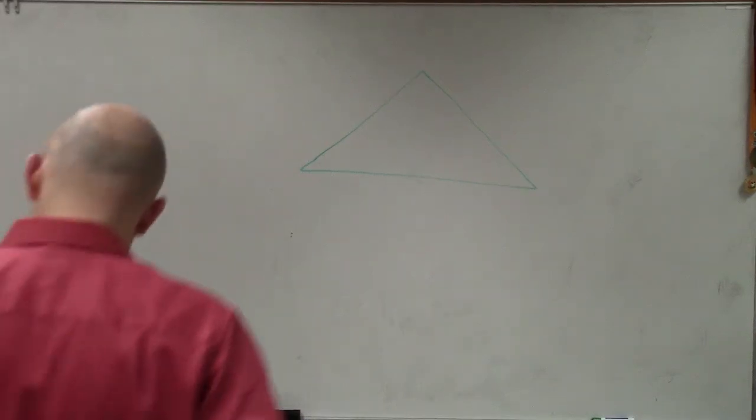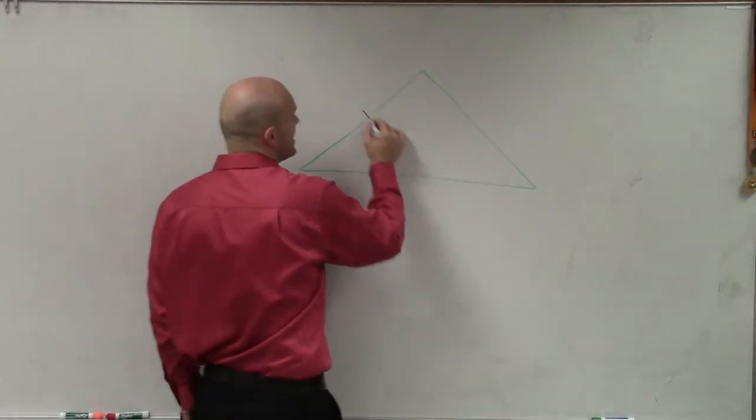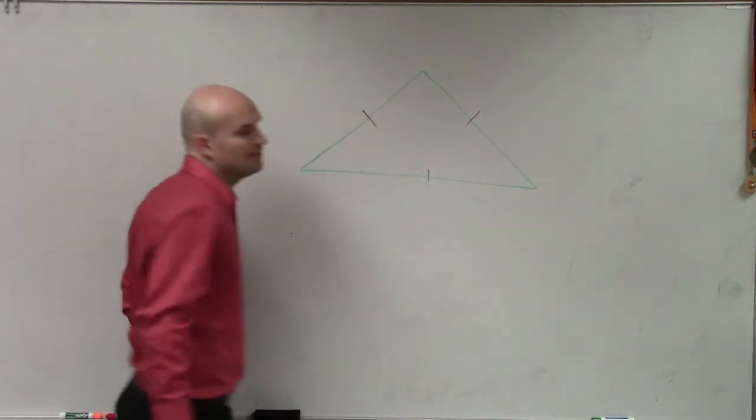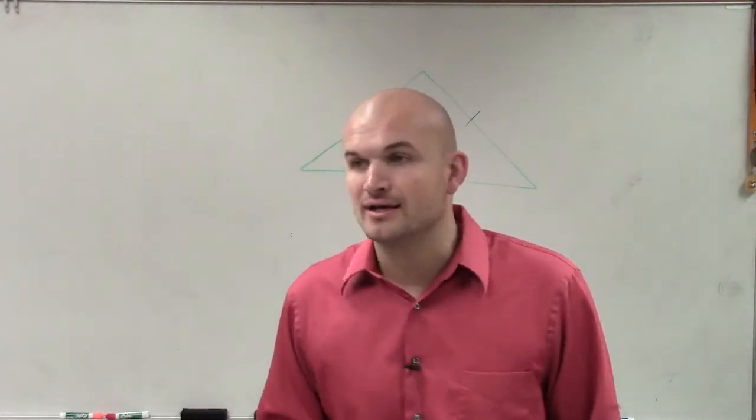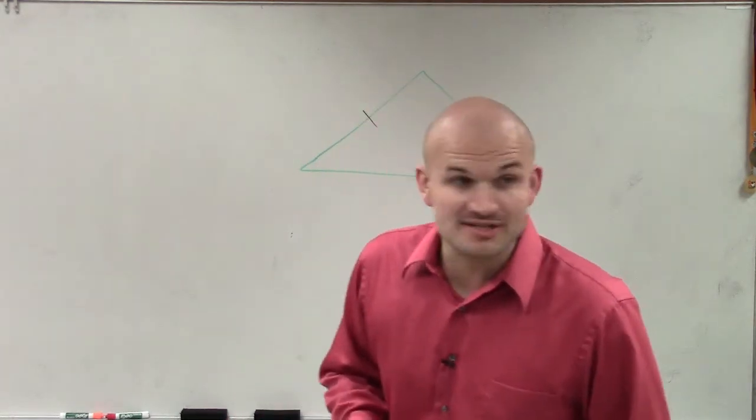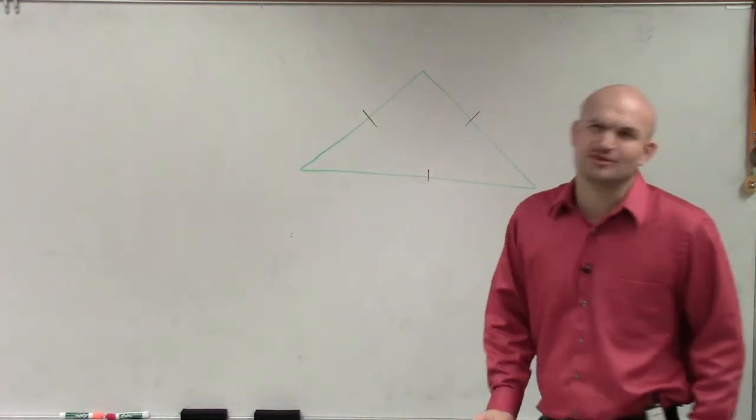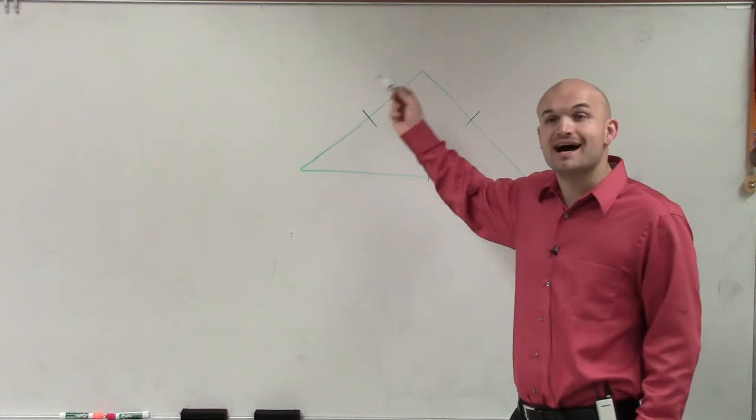OK, so in this example, question number five, they tell us that we have an equilateral triangle, meaning that all the measures of all the sides are equal in measure. I don't know if that made sense, but every side is equal in measure.